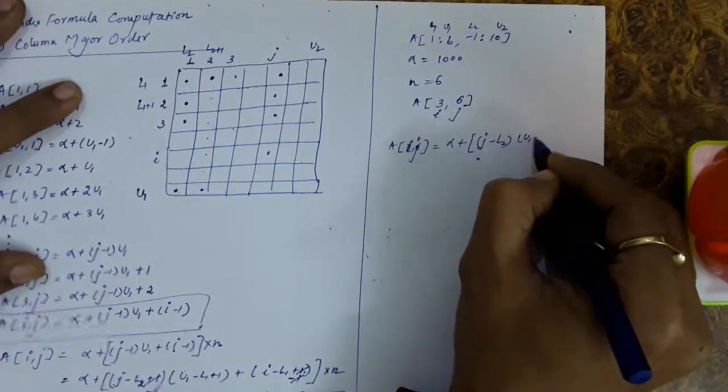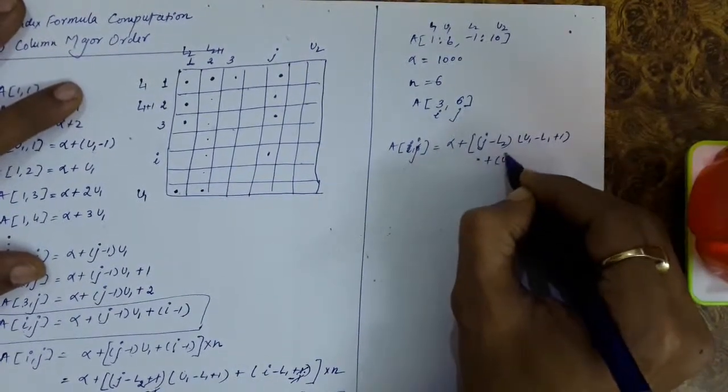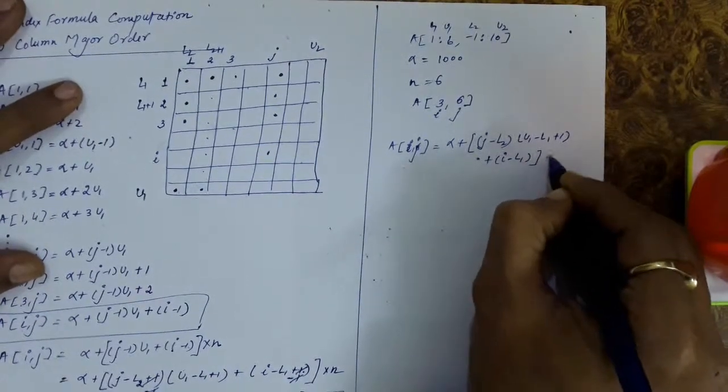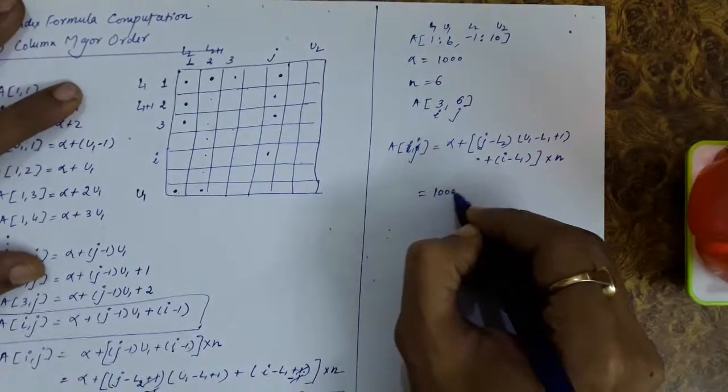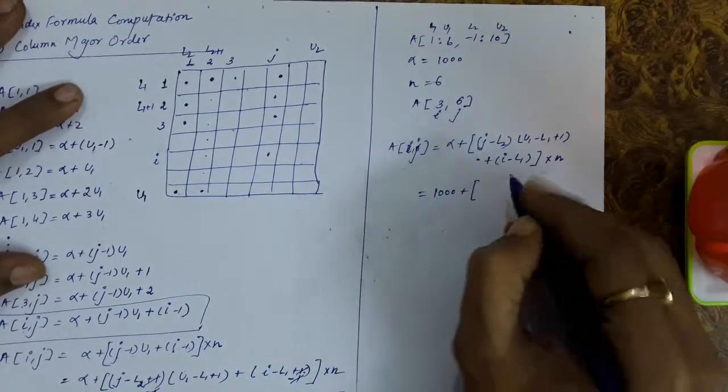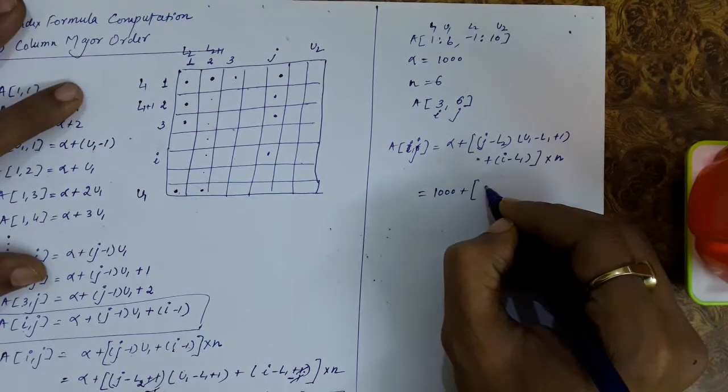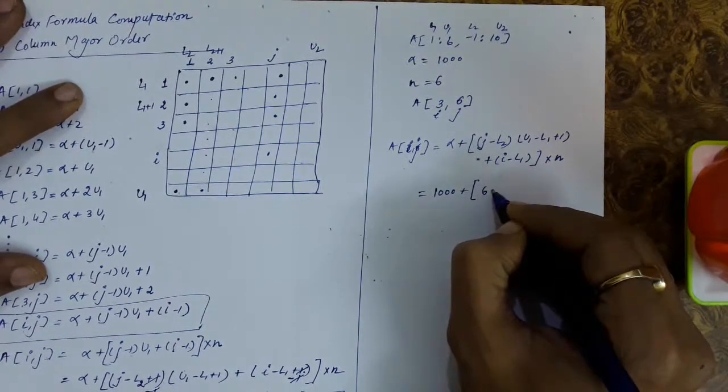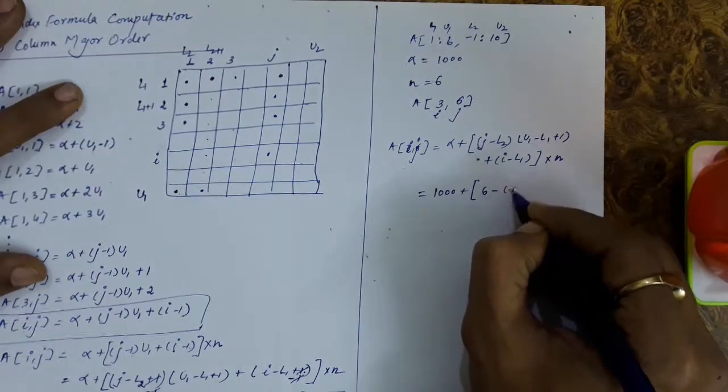u1 minus l1 plus 1, plus (i minus lower bound 1), the whole quantity multiplied with m. So alpha here is 1000, plus j minus l2 means j is 6 minus l2, l2 is minus 1 here.